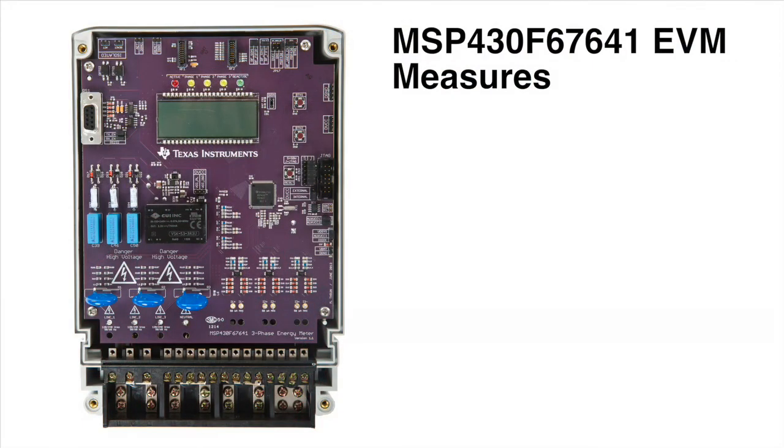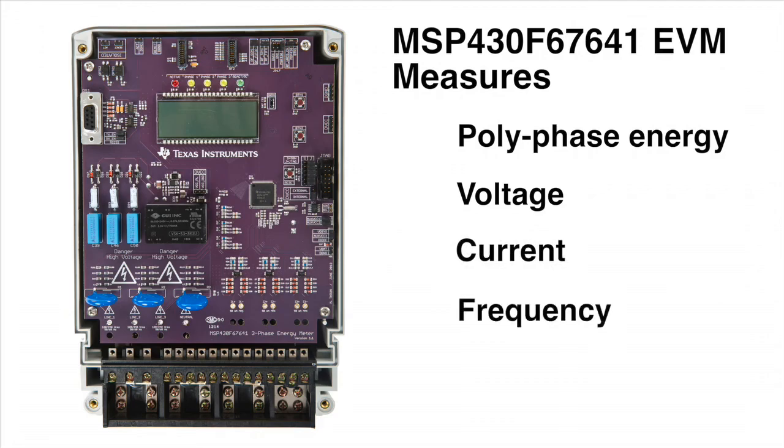This new EVM is used to measure polyphase energy, voltage, current, frequency, and power. The low-cost MSP430 F67641 is designed such that its 10-bit ADC measures phase voltages and its 24-bit Sigma-Delta ADC measures phase currents.